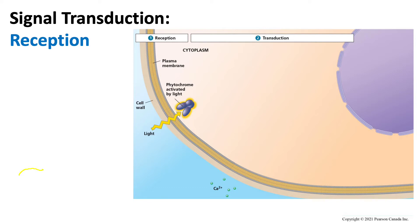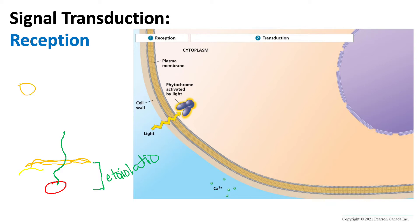Let's say this is the ground and this is our potato over here. The potato starts growing a stem, and the entire process while below ground is etiolation. But once that shoot reaches above ground and is exposed to the sun, it is now undergoing de-etiolation. The phytochromes on that stem will receive light, and once activated by light, the cell will undergo a signal transduction pathway. The first step is reception — we've received light.